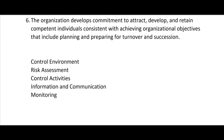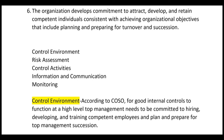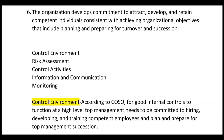Number six: the organization develops a commitment to attract, develop, and retain competent individuals consistent with achieving organizational objectives, including planning and preparing for turnover and succession. That's control environment. According to COSO, for good internal controls to function at a high level, top management needs to be committed to hiring, developing, and training competent employees and planning for top management succession.